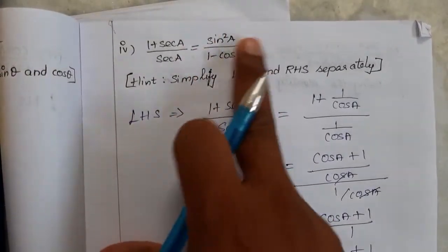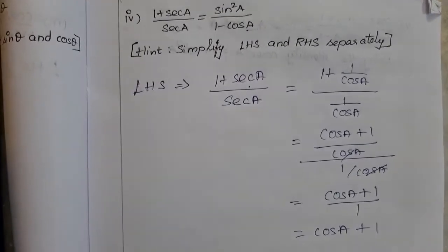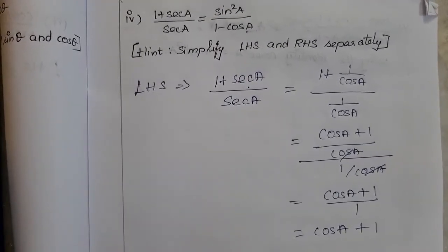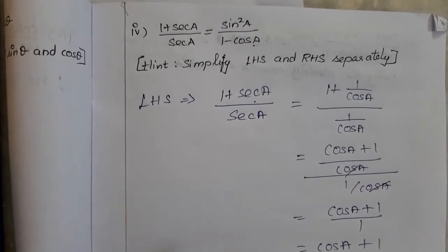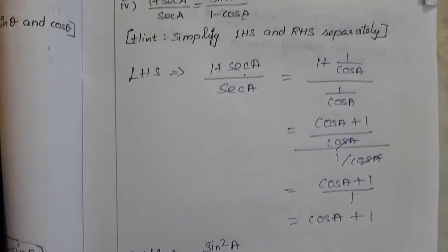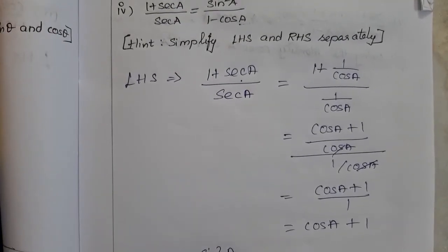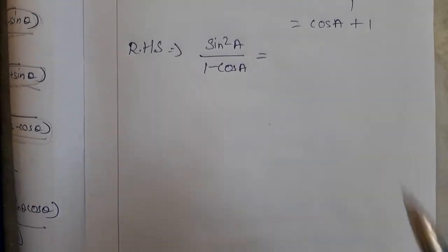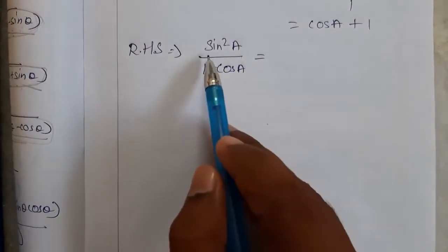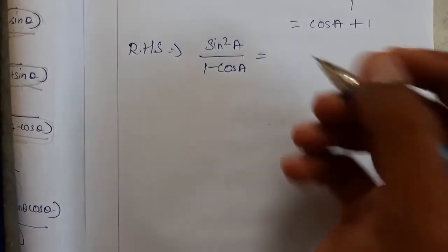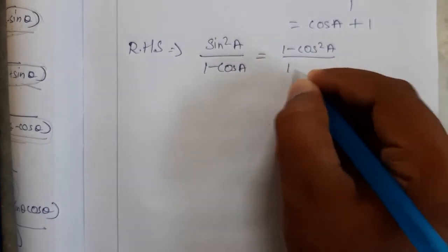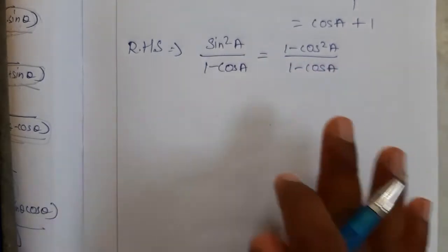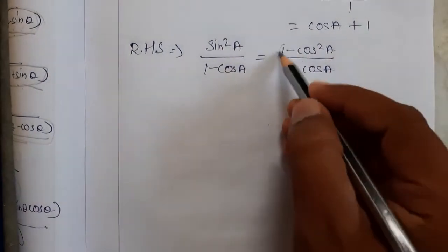We get simplified to cot A cos A plus 1, which we cannot simplify further. Now looking at RHS, it is in fraction form so let me simplify RHS and show it equals LHS. RHS is sin squared A divided by 1 minus cos A. Since LHS is in terms of cos, let us change sin squared A using the identity: it equals 1 minus cos squared A divided by 1 minus cos A.